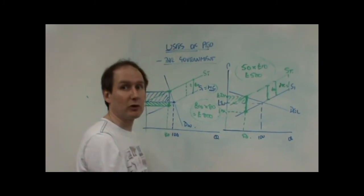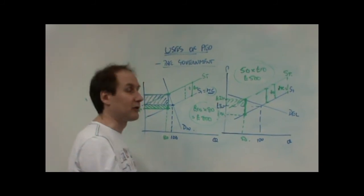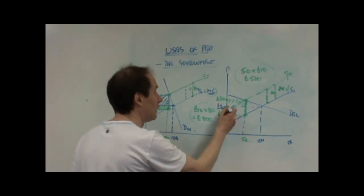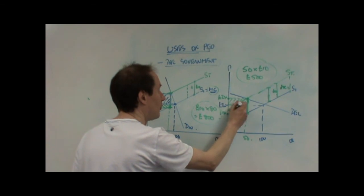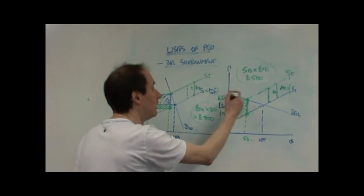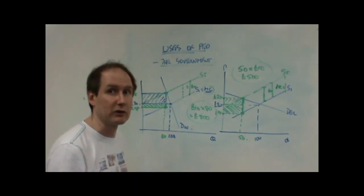They're only getting 24 pounds from the consumer. They're having to give 10 pounds to the government. Leaving them with only 14. So the producer's proportion of the tax is far greater. And the two combine giving you the government's total tax revenue.